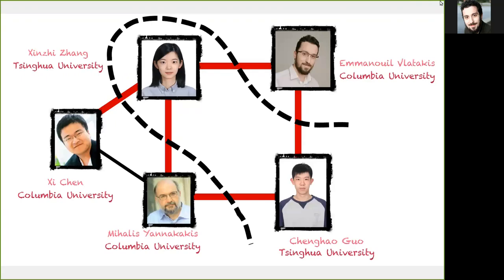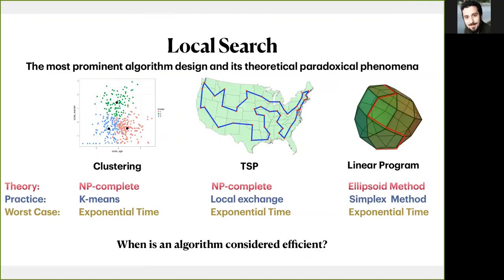Let's start our discussion with a fundamental and always motivating question: when actually should an algorithm be considered efficient? One of the most famous examples where practice and theory are not consistent in the answer of this question is local search methods. Despite their wide success in practice, many local search algorithms like K-means and Simplex, under the worst-case framework, are considered inefficient.